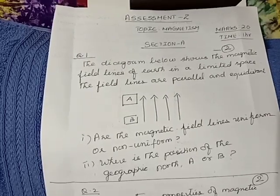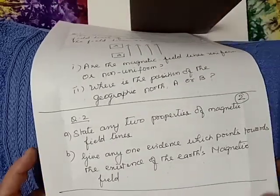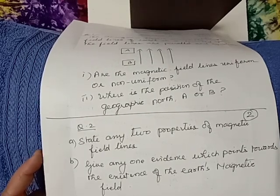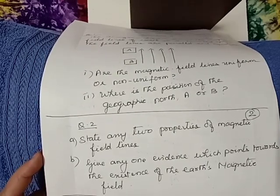Question number 2: State any two properties of magnetic field lines. Part B: Give any one evidence which points towards the existence of Earth's magnetic field. Allotment: 2 marks.